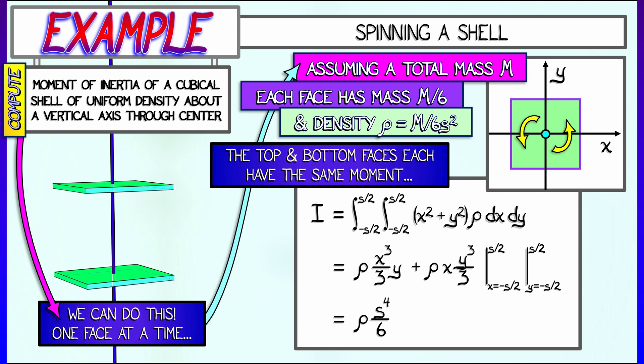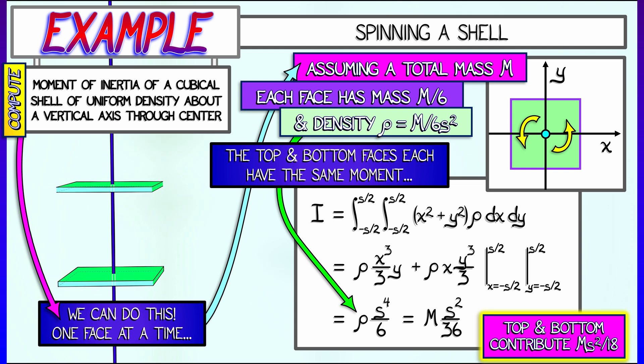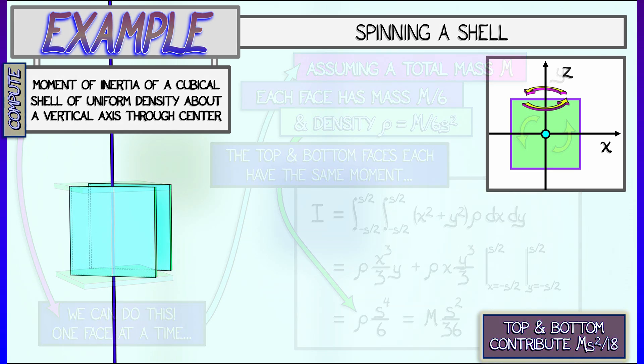If we use what we know about the density as being m over 6s squared, then we get a contribution to the moment of inertia of ms squared over 36. That is for each of the top and the bottom plates. So the total moment of inertia of the top and the bottom is ms squared over 18.